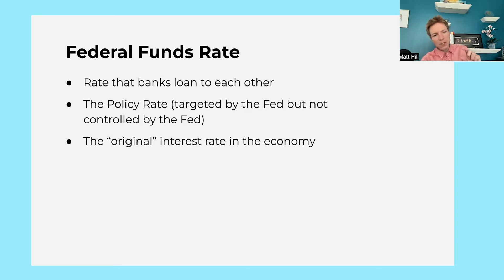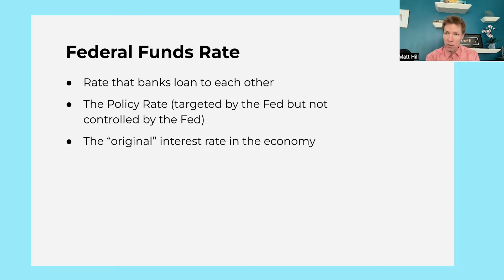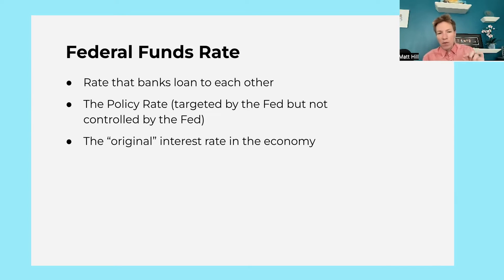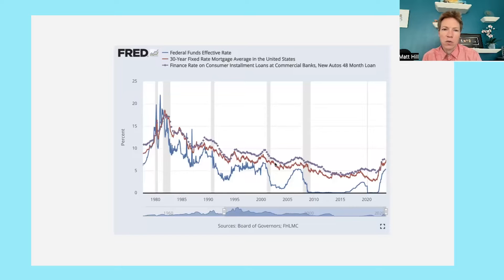The target rate — the rate that the Federal Reserve targets — is the fed funds rate. This is a great example of economists being terrible at naming things, because the Fed does not control this rate even though it is called the federal funds rate. This is the rate that banks loan to one another, not the rate that the Fed loans to banks. Since it's sort of the original interest rate — what banks charge other banks — all the other interest rates are correlated with this rate. So when the Fed is trying to raise or lower rates, this is the rate they target but do not directly control.